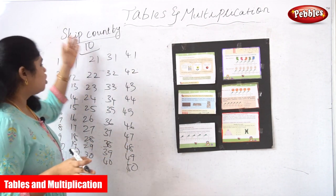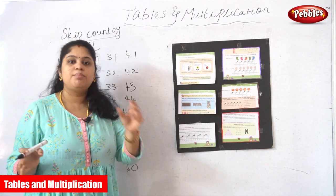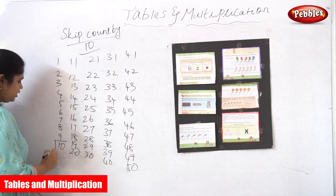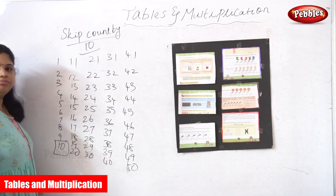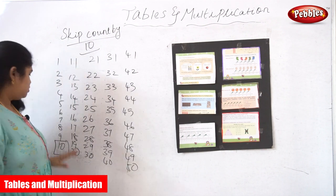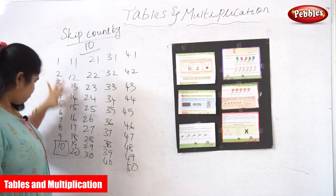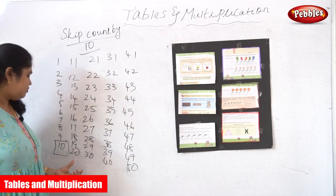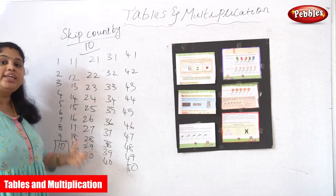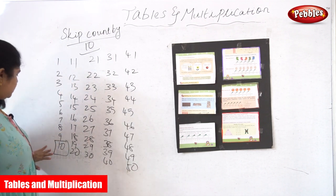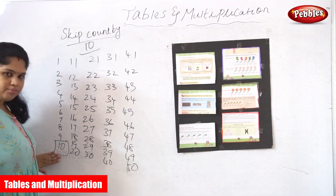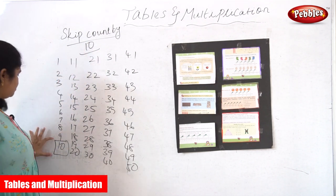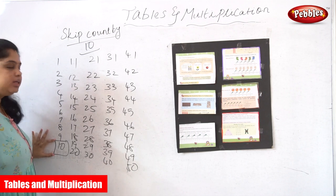So this is what I said — skip count by 10. We want to start from 10. We want to skip the 9 numbers and take the 10th number. So I am just starting from 10, because this is skip count by 10 — I am starting from the 10th.